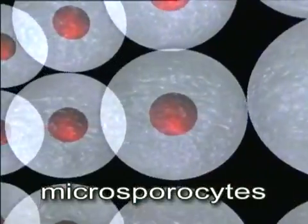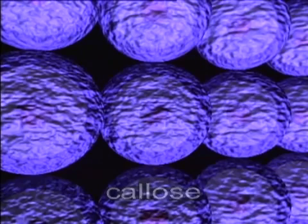The nucleus of a sporocyte cell is diploid containing two sets of chromosomes, one from each parent. As each sporocyte prepares to divide, it deposits a layer of inert callose. Callose effectively isolates the microsporocytes from one another.